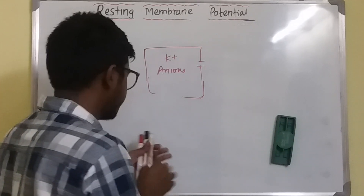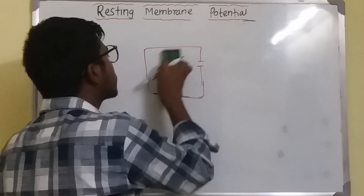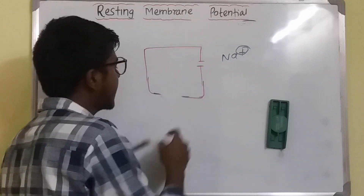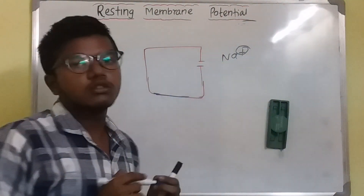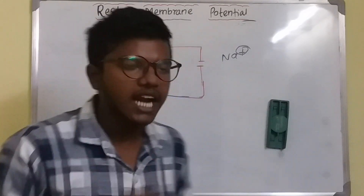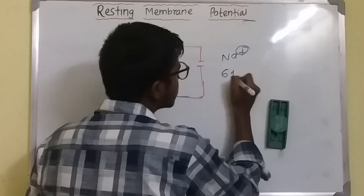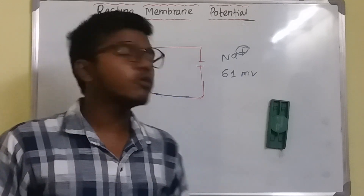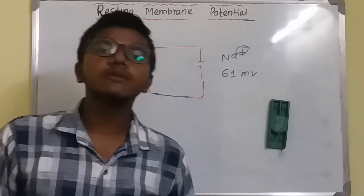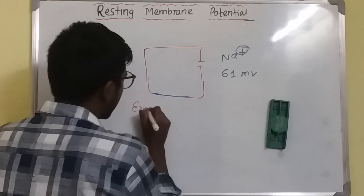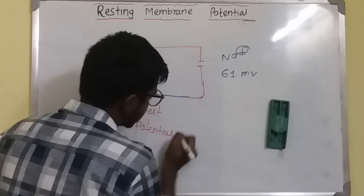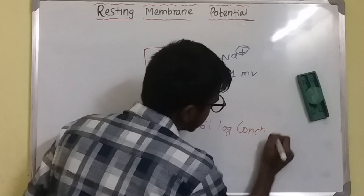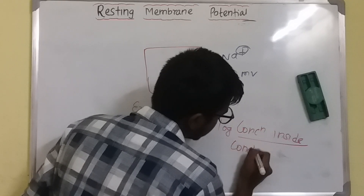Similarly is the case for sodium. Sodium is more concentrated outside, so it tends to go to the inside. But the same phenomena will occur — the concentration gradient is again balanced by the electrostatic gradient. In the case of sodium, the Nernst potential is plus 61 millivolt. There is a mathematical formula to calculate the Nernst potential: it is plus or minus 61 log of concentration inside divided by concentration outside.